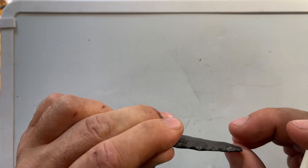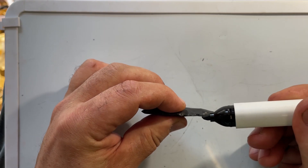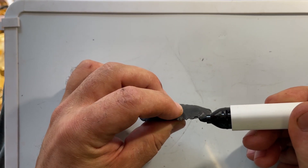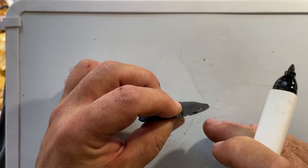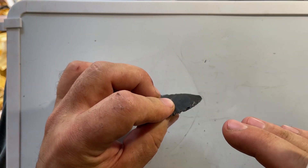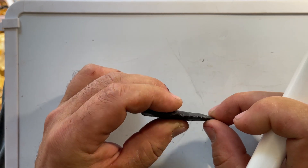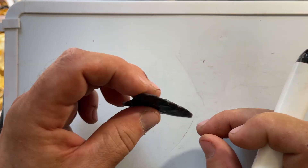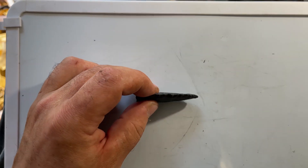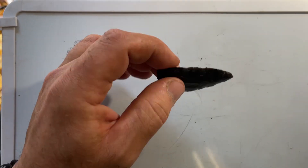If you don't have that thickness on your edge, there's just not enough material in there for that flake to form the bulb of percussion and then level out and run along under the surface. So it helps to have a little bit of thickness on your edge.